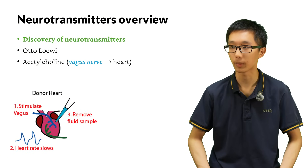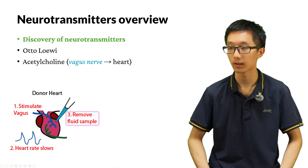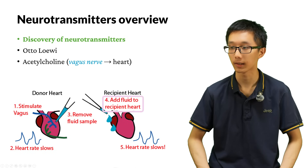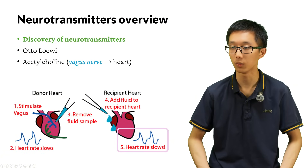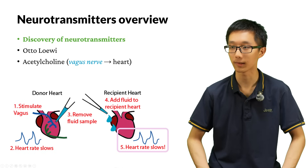Otto Loewi took a frog heart from its body — the heart did not directly stop beating. He first stimulated the vagus nerve using an electrode, and then the heart rate slowed down. Loewi then removed some fluid sample from the heart, then took another heart beating at a normal rate, and added the fluid sample to this recipient heart. Miraculously, the heart rate also slowed. This is because the fluid sample contained acetylcholine from the donor heart, which slowed the recipient heart — and thus chemical transmission of nervous signals was proved.